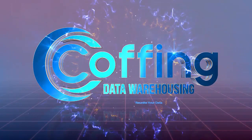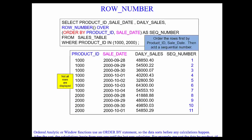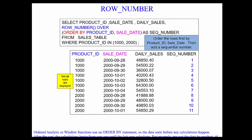We're going to start with the row number. The row number analytic is going to show you the fundamentals of how all these analytics work. Notice I'm selecting the product ID, sale date, daily sales, but then you see row number — that will be the analytic function we want to perform. It seems really simple at first, but it's going to get very powerful. You'll see row number, open paren, close paren. There's never anything inside the row number, but it is a function.